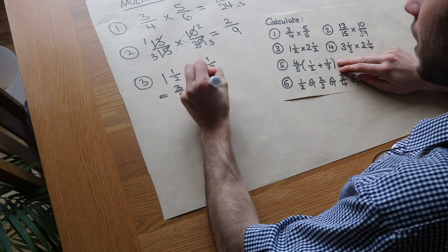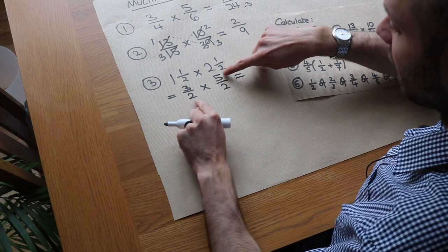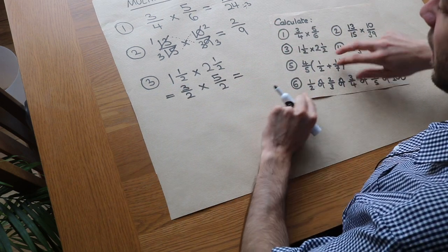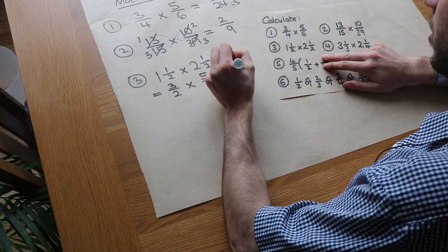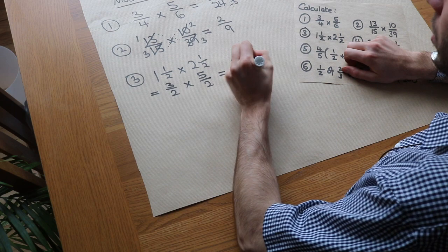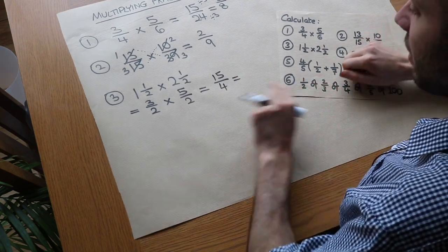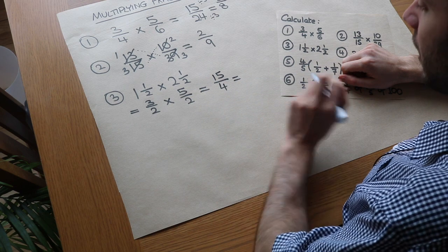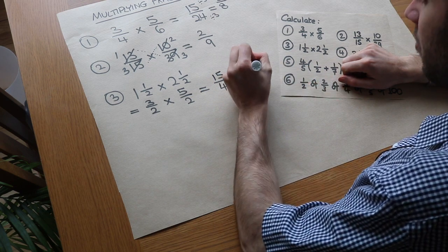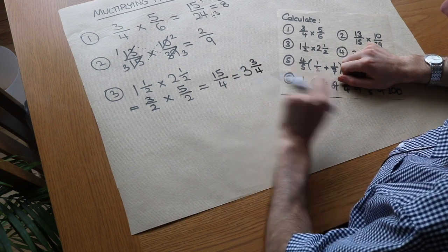For 2 and a half: 2 times 2 is 4, plus 1 is 5, so it's 5 over 2. We can't cross-cancel here — 2 and 5 don't share factors, and 3 and 2 don't either — so we multiply numerators to get 15 and denominators to get 4. To convert back: 4 goes into 15 three whole times with remainder 3, giving 3 and 3 quarters.